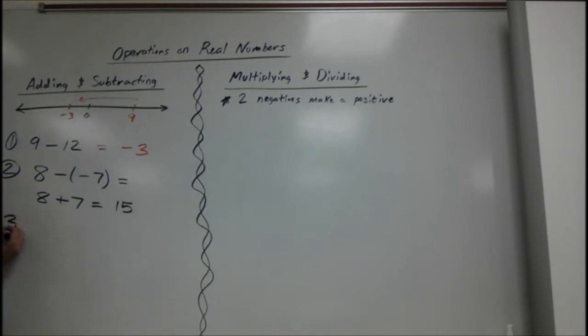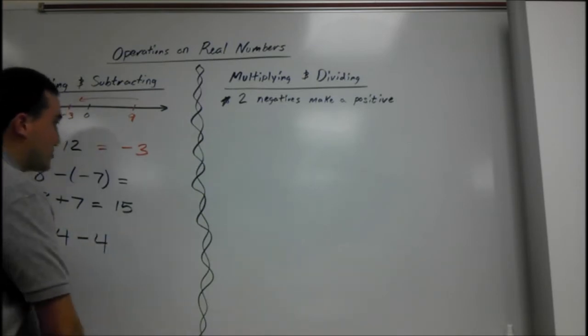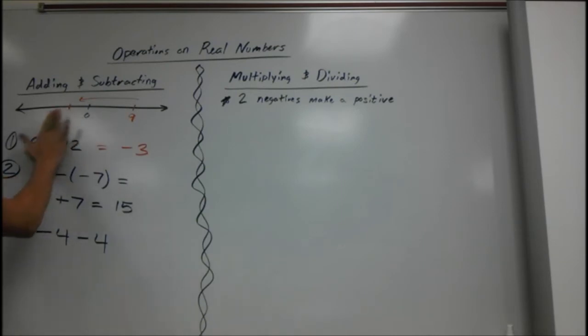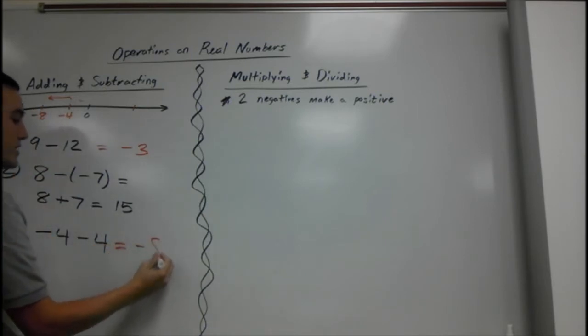Number 3. Say we have negative 4 minus 4. Now when you're subtracting negative numbers, you can think of it the same way, just like up here. Start at negative 4, and we're taking away 4 from that, so it's going to become a higher negative number. If we take away 4, it's going to become negative 8.